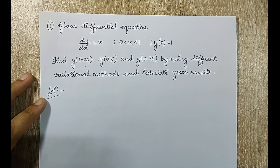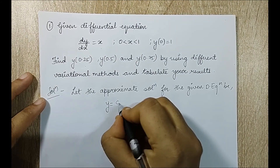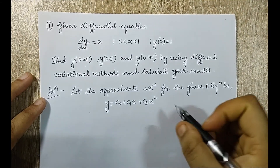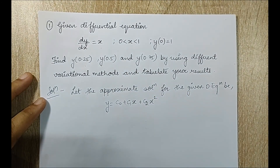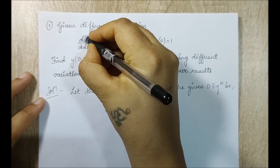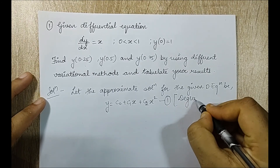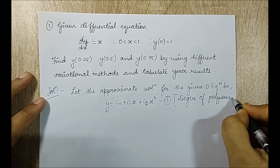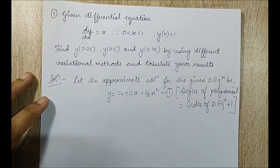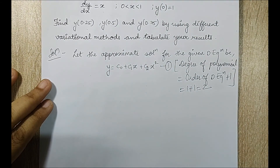The first step is to assume an approximate solution for the given differential equation. Let y = c0 + c1*x + c2*x². The degree of the polynomial should be equal to the order of the differential equation plus 1. In this equation the order is 1, so the degree equals 1 + 1 = 2. I mark this as equation 1.